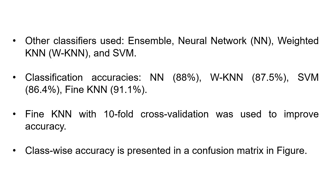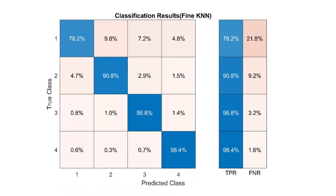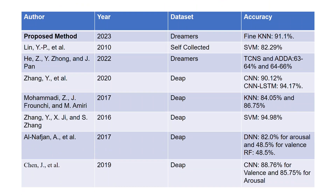The class-wise accuracy is presented in the confusion matrix for Fine KNN. As we can see, class 1 was accurately predicted at 78.2%, class 2 at 90.8%, class 3 at 96.8%, and class 4 at 98.4%. By comparing with previous methods, our proposed method using the DREAMER dataset and Fine KNN achieves 91.1% accuracy for the four-class problem.